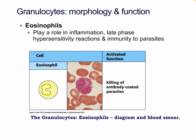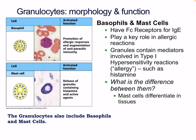Eosinophils play a key role in inflammation, late-phase hypersensitivity reactions, and immunity to parasites. They are important in killing antibody-coated parasites, and without them we can have significant problems. Basophils and mast cells are quite similar but have slightly different roles. Both have FC receptors for IgE, a type of antibody, and respond to antibody responses involving IgE — commonly seen in allergic reactions. Their granules contain mediators involved in type 1 hypersensitivity reactions, such as histamine.